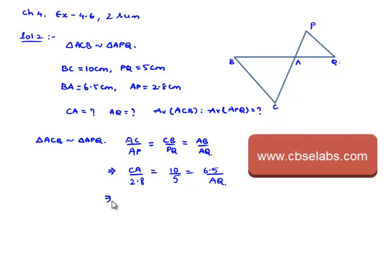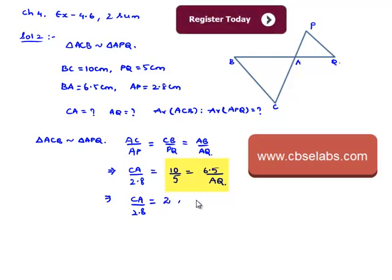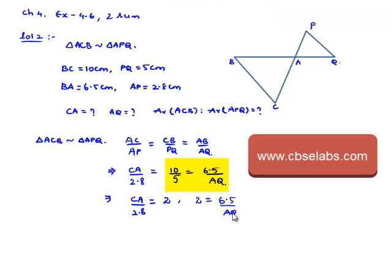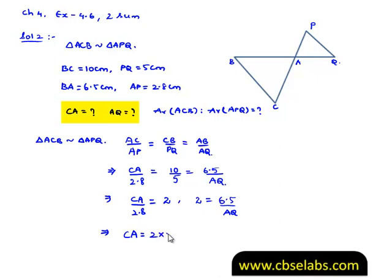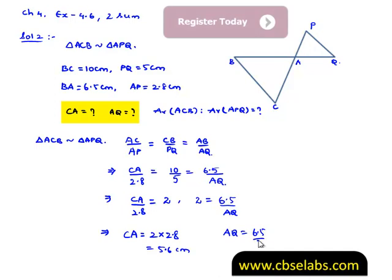Now that implies CA by 2.8 is equal to 10 by 5 which is nothing but 2. Let us consider this relation again: 10 by 5 is equal to 6.5 by AQ, which implies CA is equal to 2 times 2.8 that is nothing but 5.6 cm, and here we need to find AQ. AQ is equal to 6.5 by 2 that is nothing but 3.25 cm.